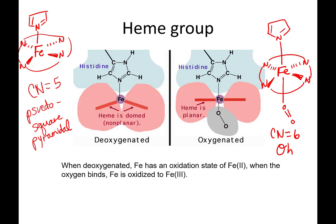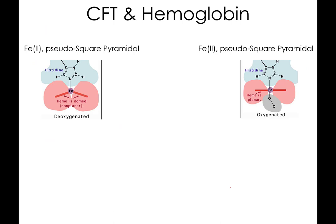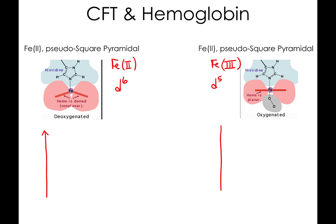Deoxygenated hemoglobin contains iron 2+. When oxygenated, the oxygen oxidizes iron from iron 2+ to iron 3+. For crystal field theory: iron 2+ is d6 (8 minus 2), and iron 3+ has a d5 electron configuration. The splitting diagram for each of these will look a little different.